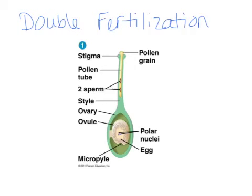Angiosperms also perform double fertilization, which is unique to angiosperms and is an evolutionary adaptation crucial for their success — enabling them to thrive as the largest category of plants. In the first step, the pollen grain germinates to form a pollen tube, which works its way down the style toward the ovary. Importantly, the pollen tube contains two sperm cells, both of which are needed for double fertilization.